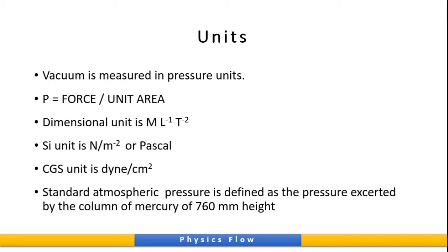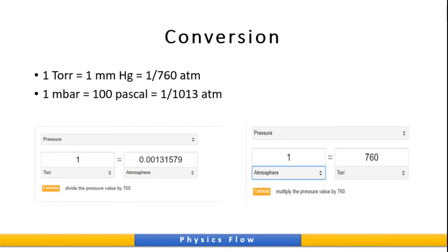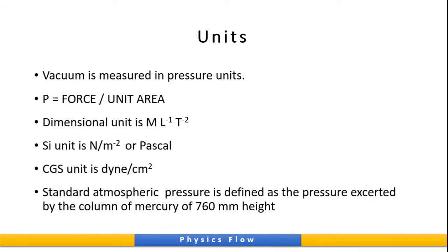Let's go to the conversion of pressure. 1 torr equal to 1 millimeter mercury equal to 1/760 atmosphere. Standard atmospheric pressure is defined as the pressure exerted by the column of mercury of 760 mm height.